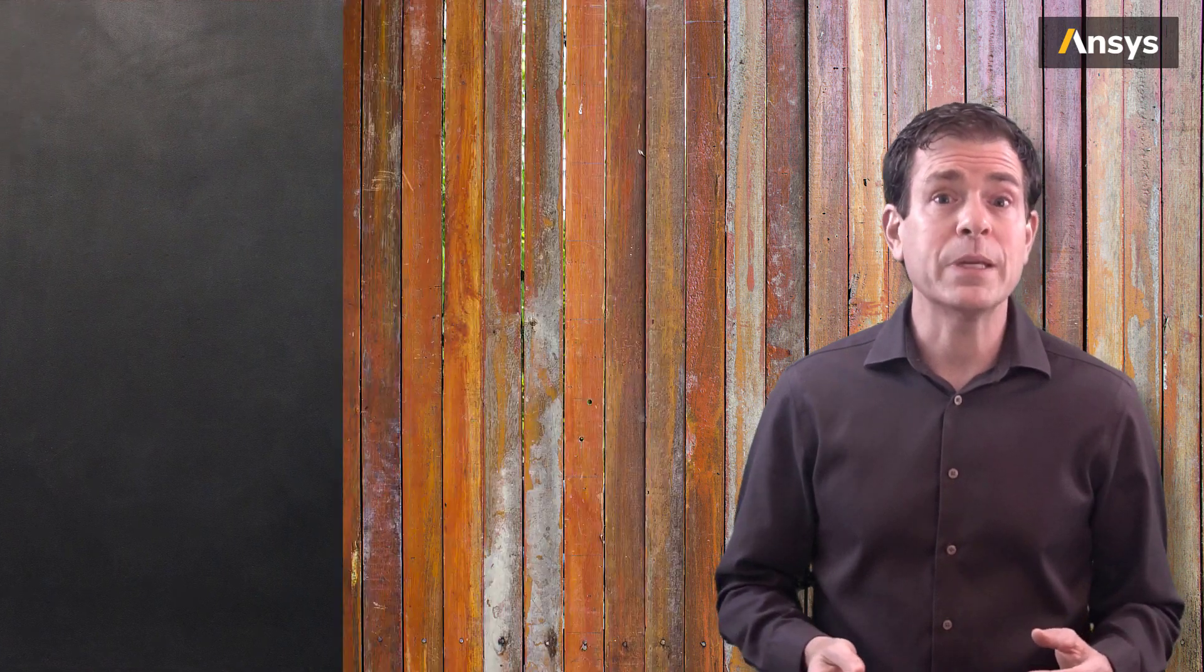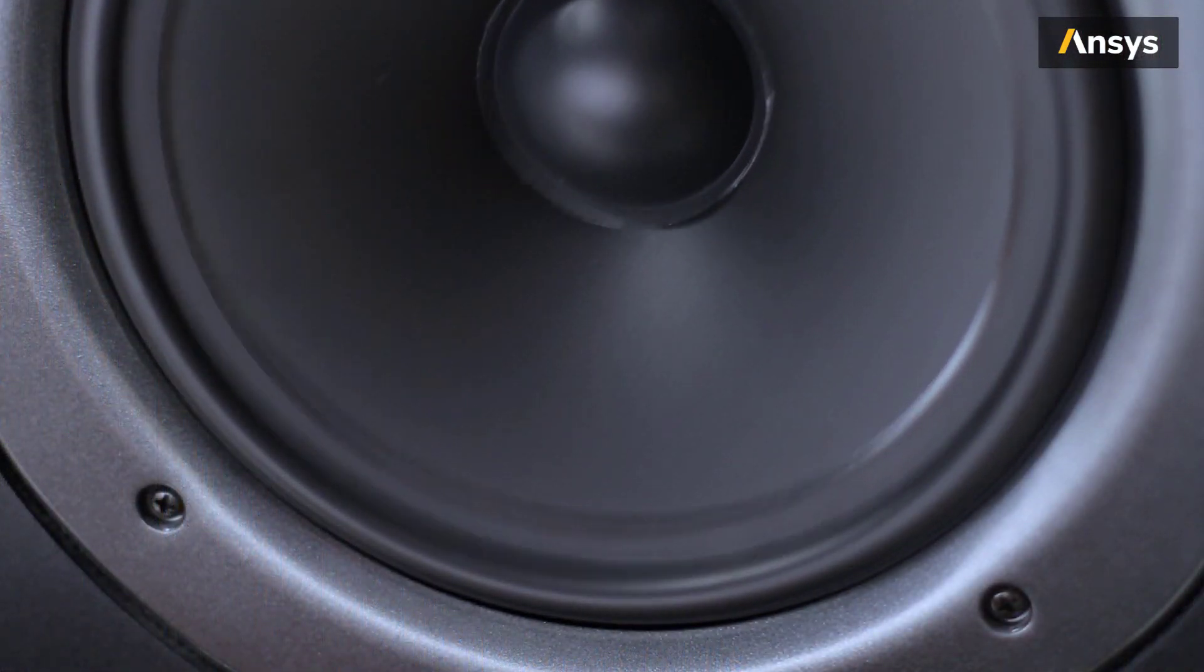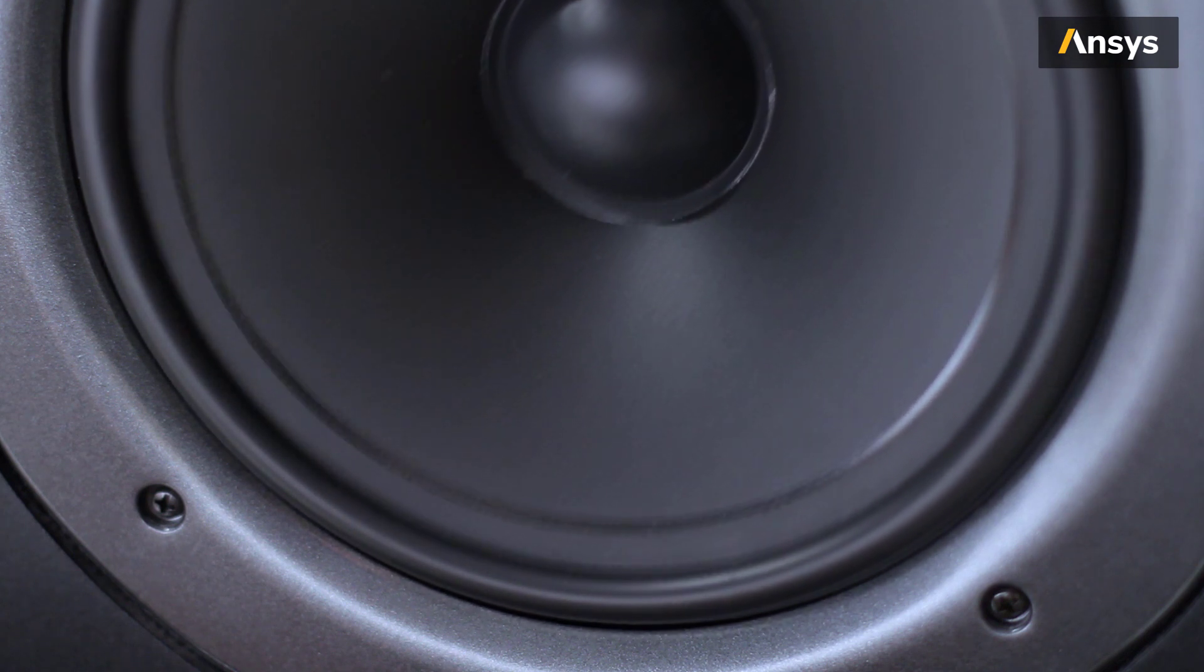Another example of viscous damping would be a loudspeaker, where external fluid such as air provides viscous damping to the cone of a loudspeaker. The large face of the cone is moving in and out at varying frequencies, and is interacting directly with the air affecting the vibration characteristics. Designing a loudspeaker, one needs to understand the effects of this interaction.